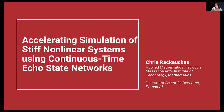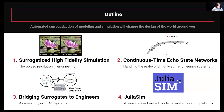I'm Chris Rokakis, MIT math instructor and director of scientific research at Pumas AI. What I'm going to be talking about today is not only how you can handle stiff systems with surrogates, but a whole trajectory. First, I'll describe why surrogatized dynamical systems are interesting and what kinds of problems they can potentially solve. Then I'll describe the continuous-time echo state network — the methodology that lets engineers automatically use surrogates without worrying about a lot of the details.